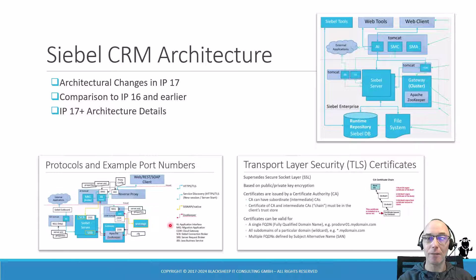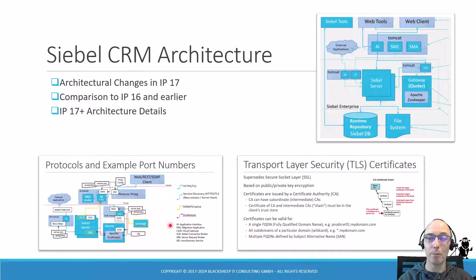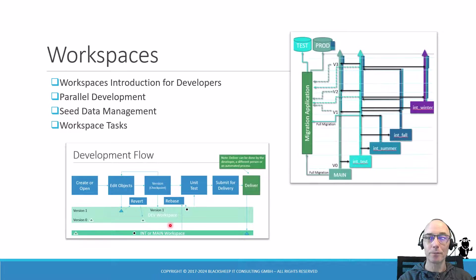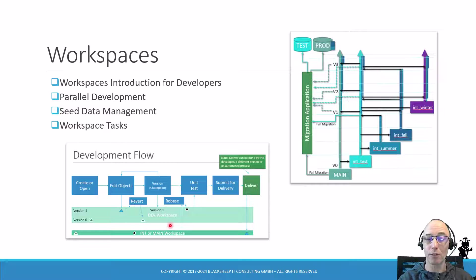The IP17 and later architecture contains a lot of changes that developers need to understand, as well as administrators, so we have included this important chapter. You also need to understand workspaces, which are mandatory in IP17 and higher. You get a thorough introduction to workspaces, CIZD, parallel development, CRM data management, and all the tasks related to workspaces.